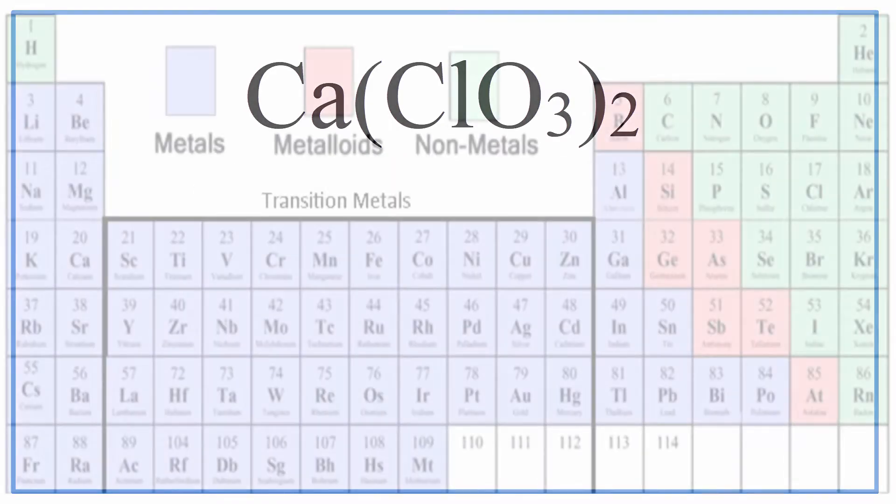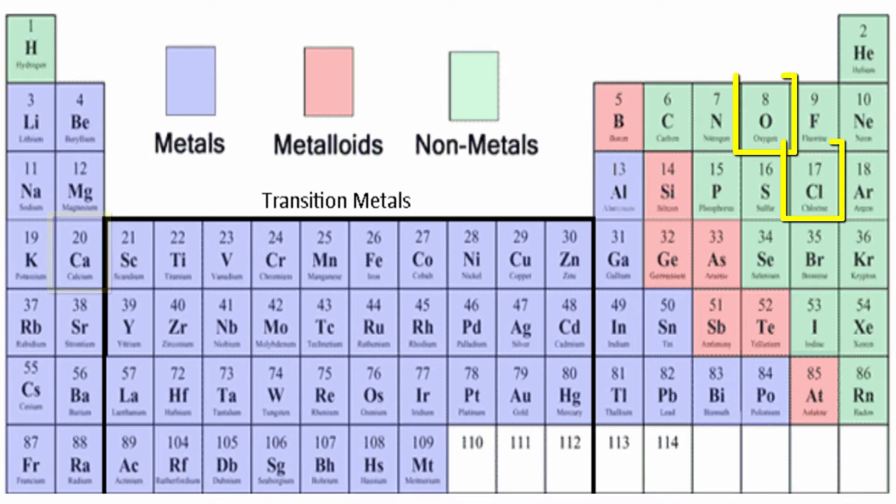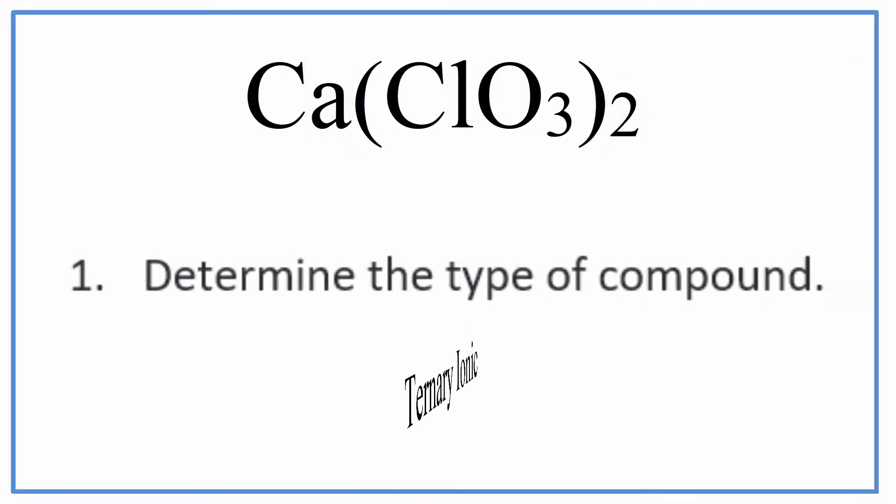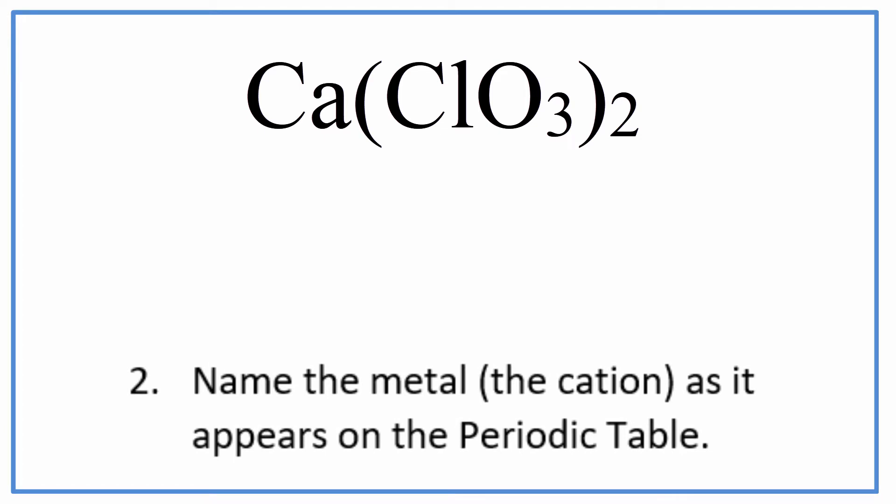On the periodic table, we can see that calcium, that's a metal. Then we have that ClO3, that's a group of non-metals, and that makes this a polyatomic ion. So it's a ternary ionic compound.